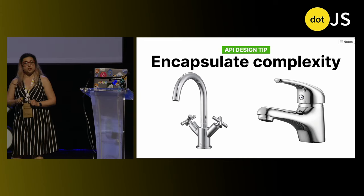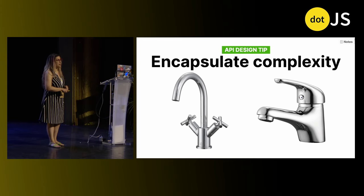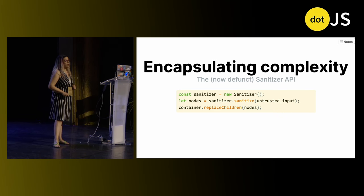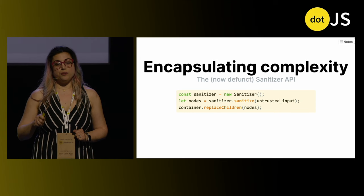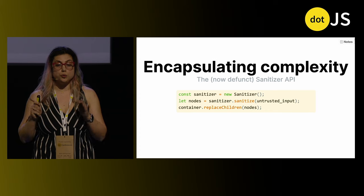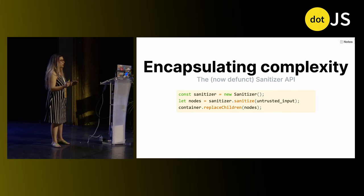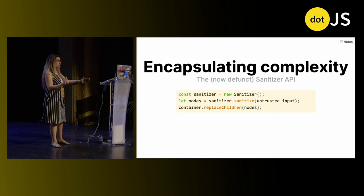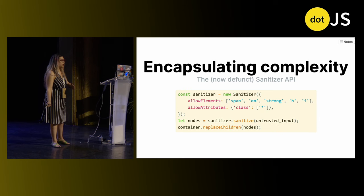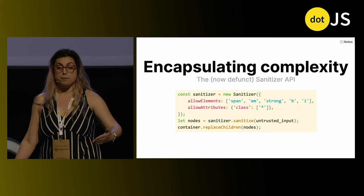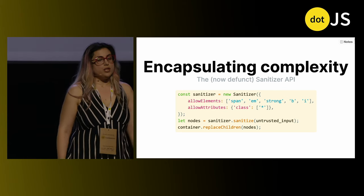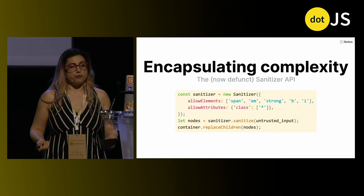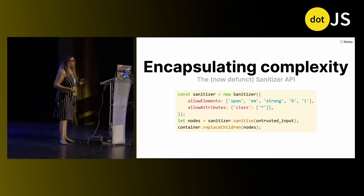I really liked how the old Sanitizer API proposal did this — it's now defunct for other reasons, but it was very interesting how they optimized for the common case, which was actually very complex: full of edge cases and logic. People wanted to pass untrusted input and make it safe to put in the DOM. It offered extension points so you could customize behavior, making complex things possible. UI complexity was revealed progressively as needed, and didn't get in the way when not needed.